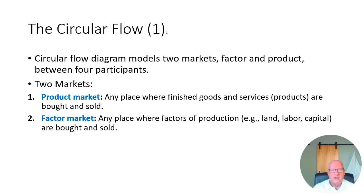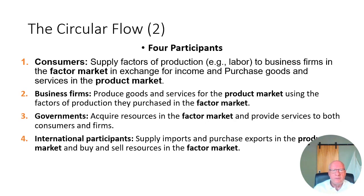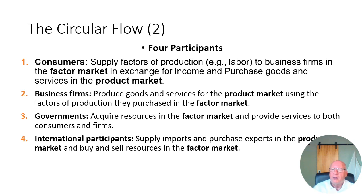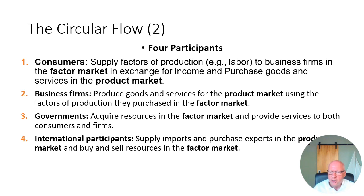We're going to continue on with our circular flow and talk about who the participants are. Consumers will supply the factors of production, such as labor. Consumers are actually on two sides of the market at the same time. You as a consumer supply yourself to the factor market, but when you go to Publix, you are a consumer buying from them. In the factor market, the business is the demand and the individual consumer is the supplier. But in the final goods and services market, the firm is the supplier and the consumer is the buyer.